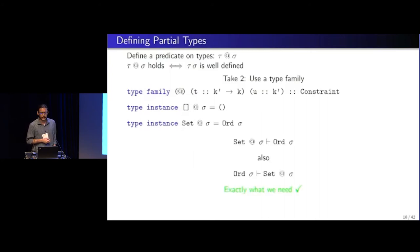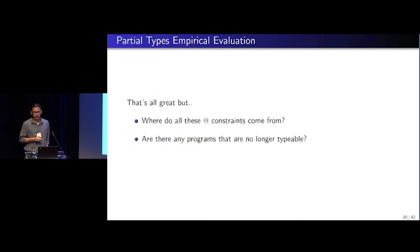For sets, or partial data types, we equate that to odd. For sets, we have set at sigma is equal to odd sigma. So we see that this bidirectional property is trivially satisfied. And this is exactly what we need. So this looks promising.